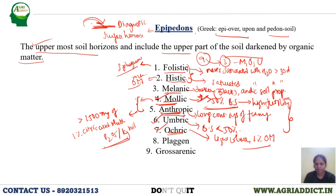Plaggen epipedon is usually made by maneuvering with a spade, and it also shows spade marks in the horizons.